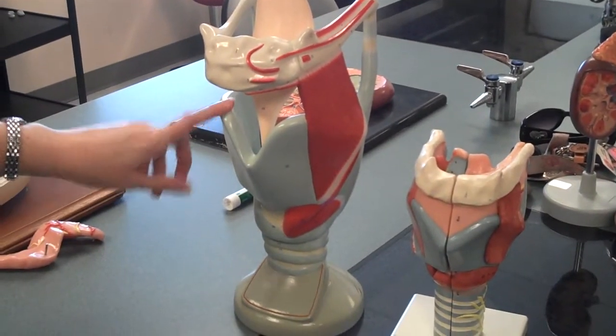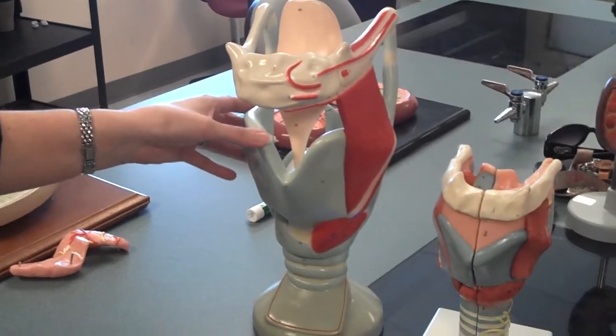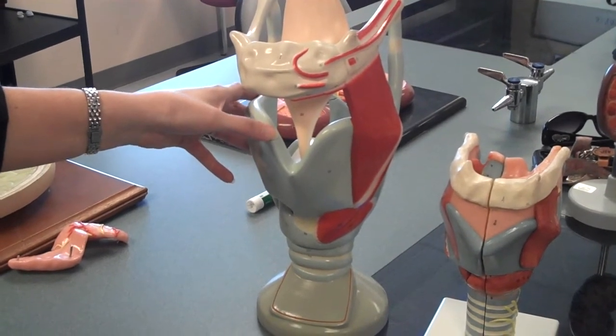Okay, this is a model of the larynx. This is the passageway for air. This is also where the voice box is located.